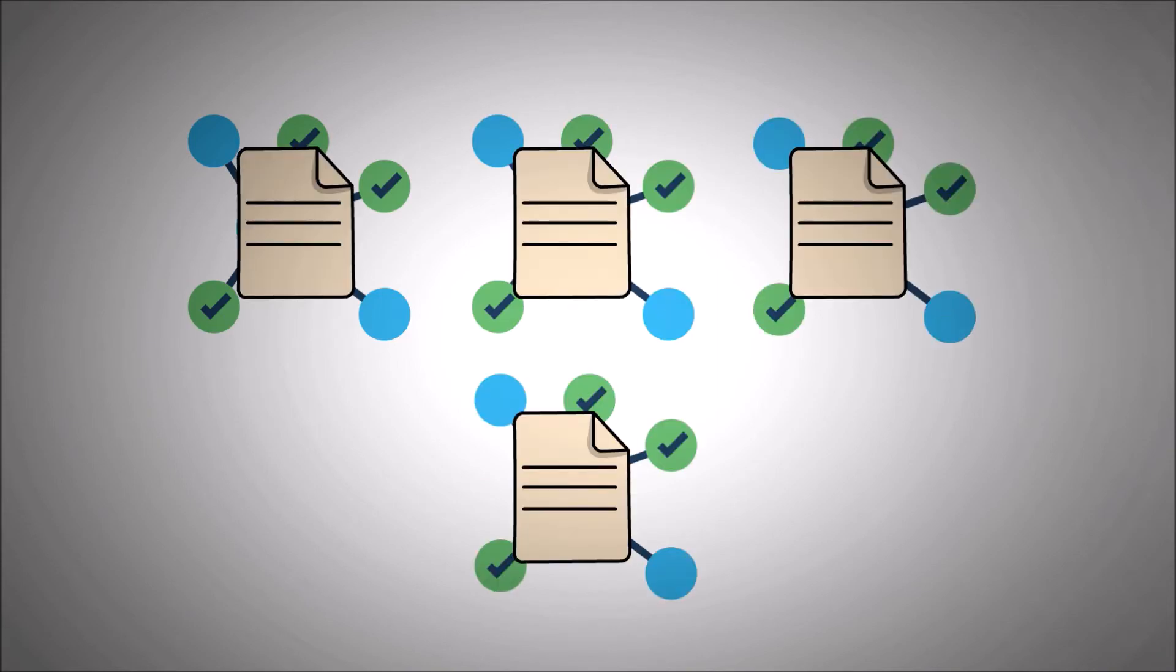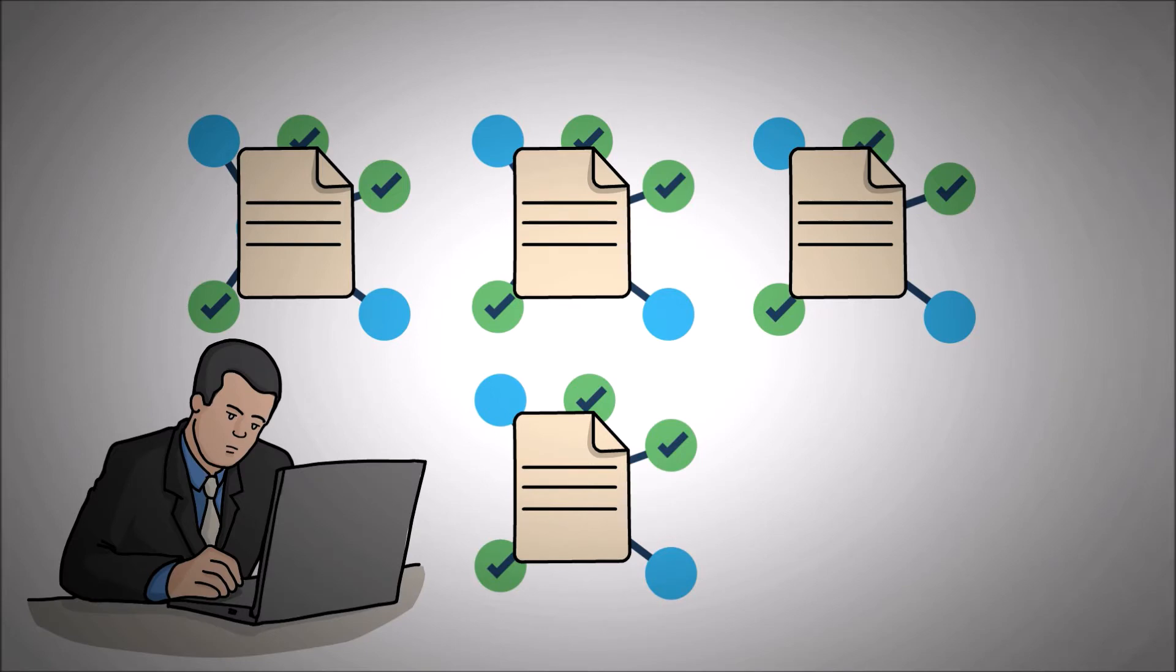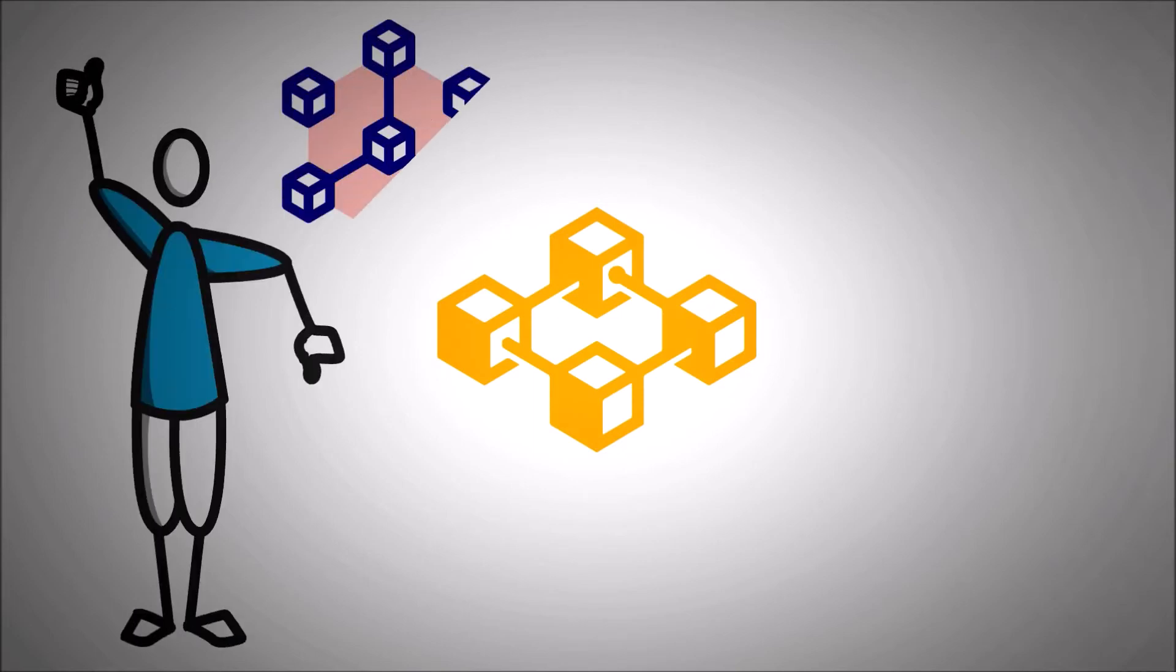Each node can store a complete copy of the distributed ledger. With this, any user can access the data and can view all transactions conducted or stored on the network. Launching a network node used to be practically the only way to connect to the blockchain.